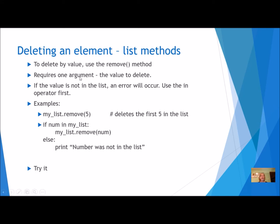However, if the value is not in the list, an error will occur. So you should use the 'in' operator - like we've talked about before, I use the 'in' operator for index, I should use the 'in' operator for remove so I don't get a runtime error. Here's an example: mylist.remove(5) - if you already know that 5 is in your list, you can remove it no matter where it is. I don't have to know the index.